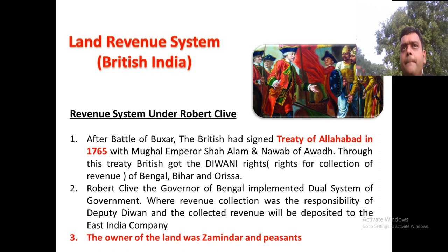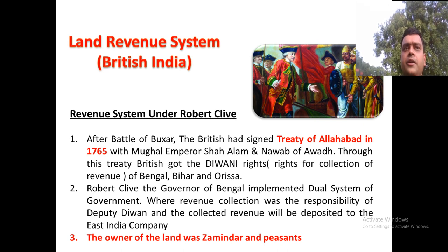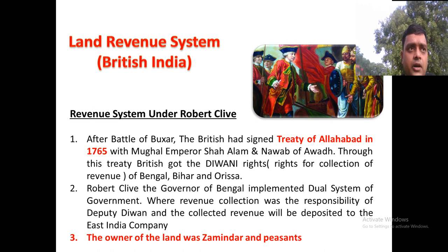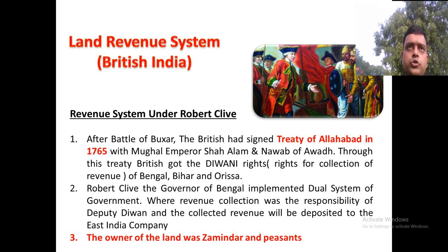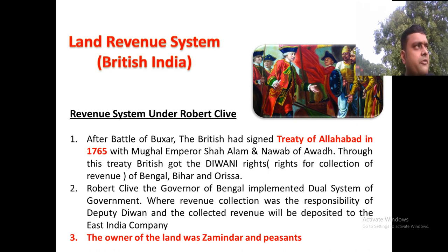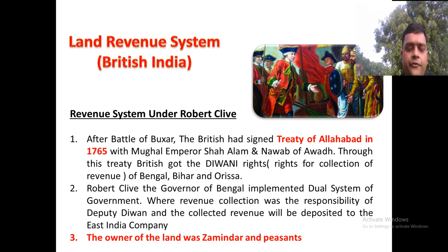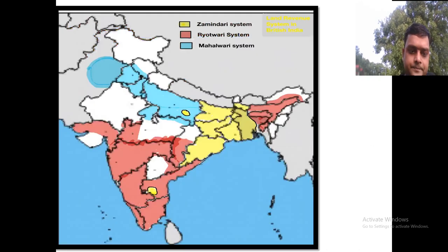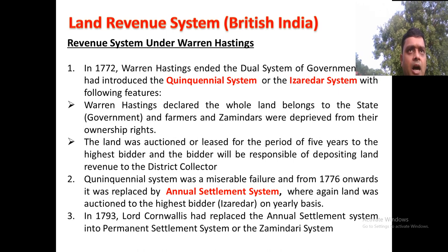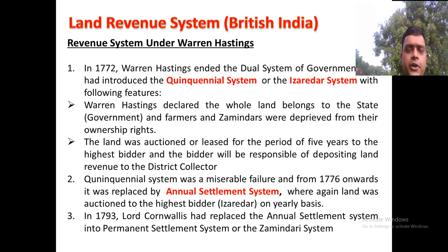Robert Clive, as Governor of Bengal, implemented a dual system of government. Since the East India Company lacked sufficient officers to directly collect revenue, Clive appointed former Nawab's officers as 'Deputy Diwans' to collect revenue on behalf of the British and deposit it to the East India Company. However, this dual system — one part revenue collection, one part Nizamat — proved a miserable failure.